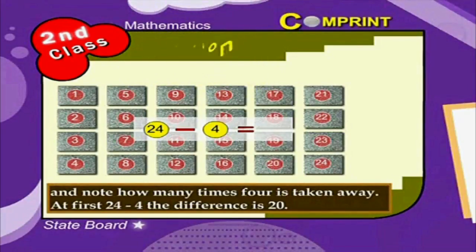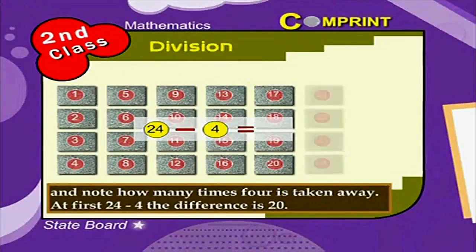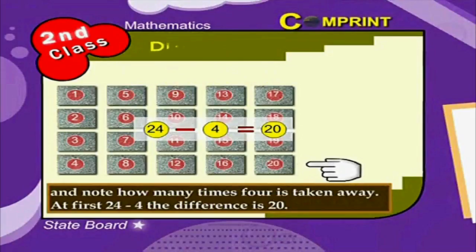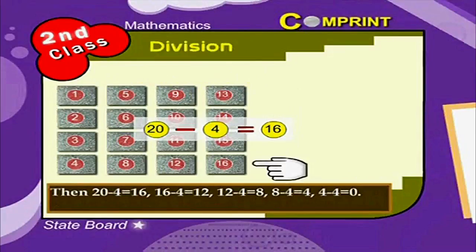At first, 24 minus 4. The difference is 20. Then, 20 minus 4 is equal to 16.